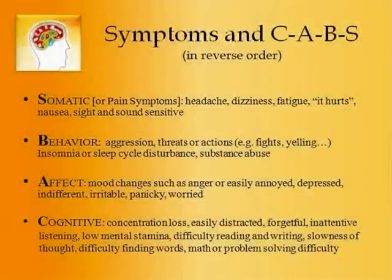I use the mnemonic CABS — C-A-B-S — to refer to this hierarchy, but it's sort of in reverse: Cognitive, Affective, Behavioral, and Somatic. That's something you can remember, like taxi cabs.